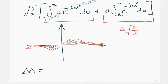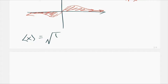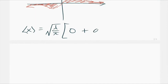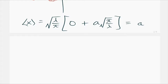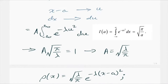So ⟨x⟩ = √(λ/π) · [0 + a·√(π/λ)] = a. Once you learn how to use these general Gaussian integral formulas, these integrals actually become really easy.